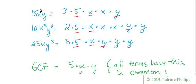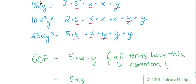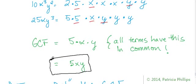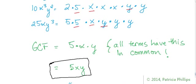They all have a 5, they all have an x, and they all have a y. Some of them have more than one of the variables, but we're looking for what they all have in common. So the greatest common factor is 5 times x times y, which we write simply as 5xy.